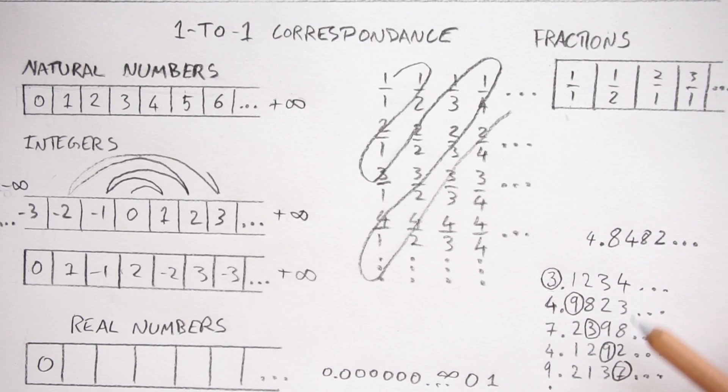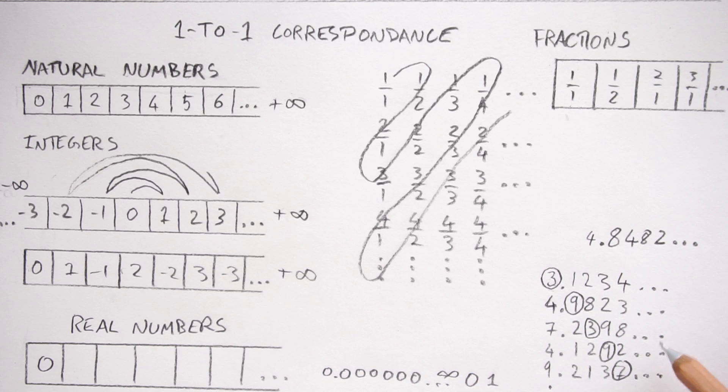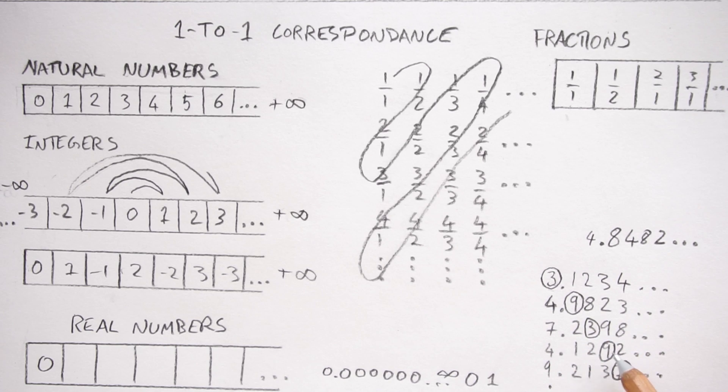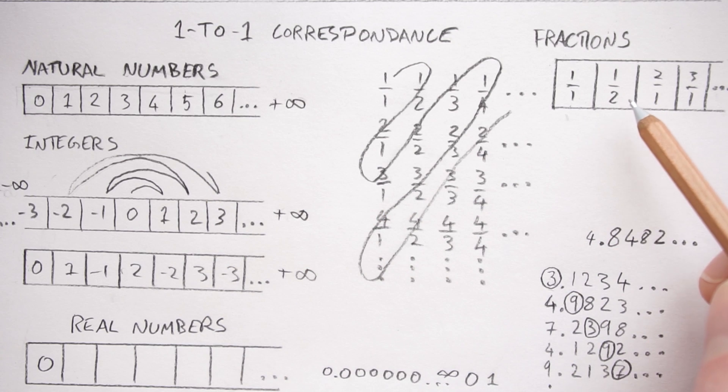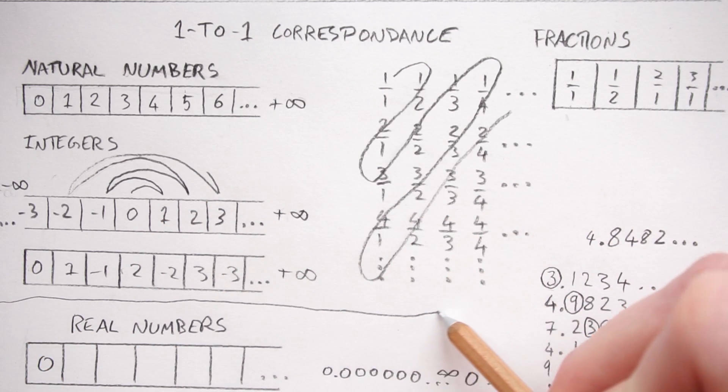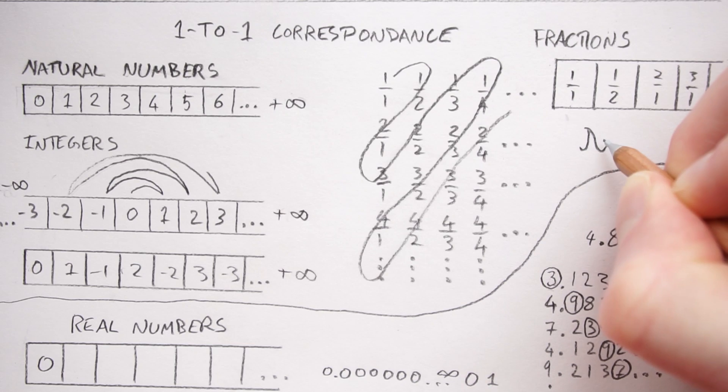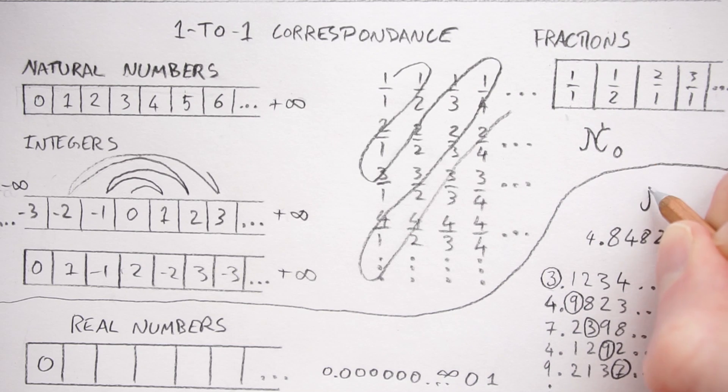And that was George Cantor's very clever proof about how you can never ever have a list of all of the real numbers. And his argument is that the real numbers are a bigger infinite set than any of these sets of numbers. So mathematicians have actually given these different names. This kind of infinity they've called aleph null and this kind of infinity they've called aleph one.